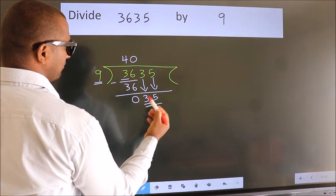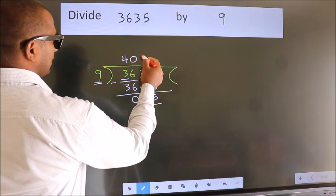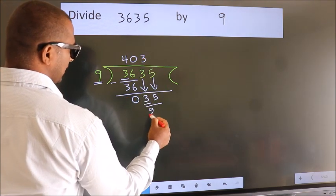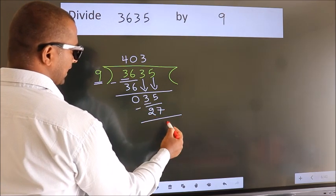So 35. A number close to 35 in 9 table is 9 threes 27. Now we subtract. We get 8.